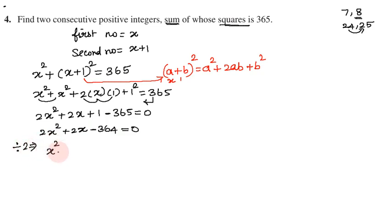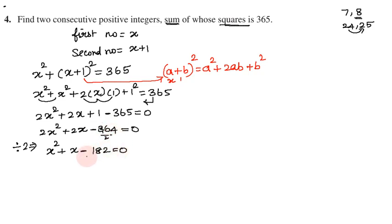Dividing all terms by 2: x squared plus x minus 182 equals 0. Now we will factorize. We need two numbers whose product is 1 times minus 182, which is minus 182, and whose sum is the middle coefficient 1. So we look at factors of 182.